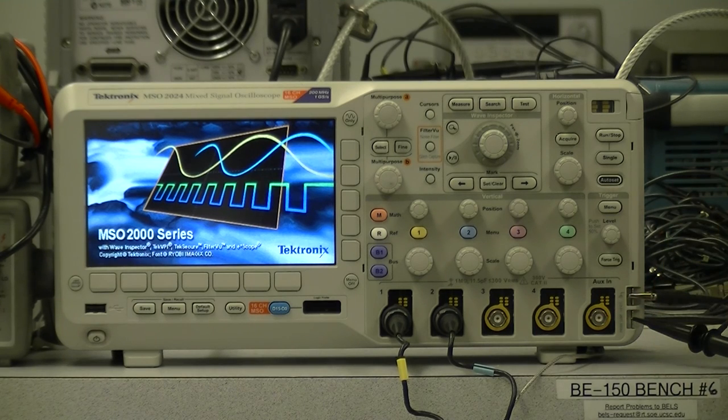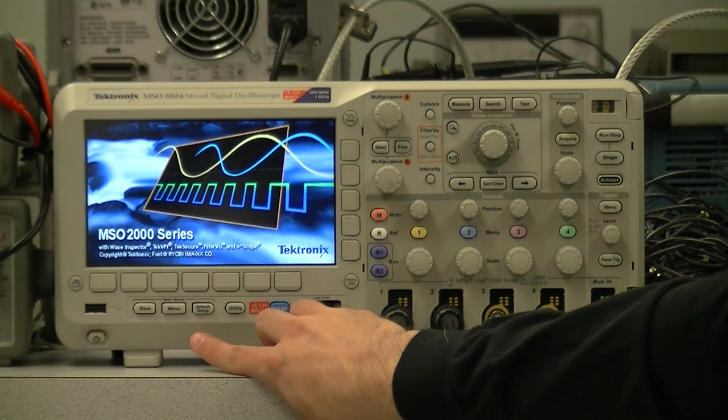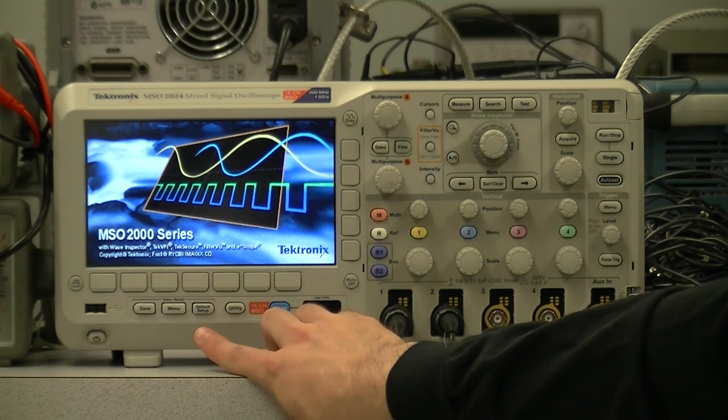This calibration output is a 5V square wave. Now, when the oscilloscope starts up, it will be in whatever settings the previous person left it in, which is probably not what you want. Once it's finished setting up, we will press the default setup button here to restore it to the factory default settings.